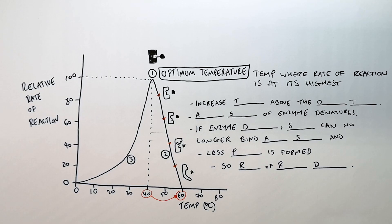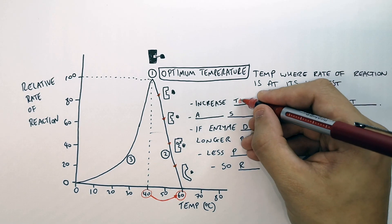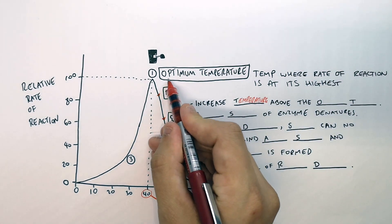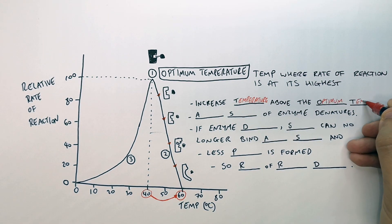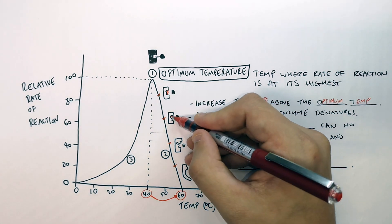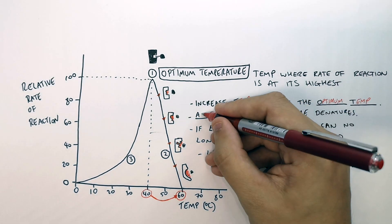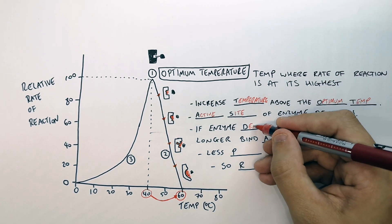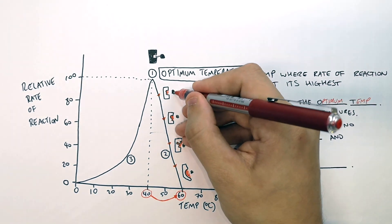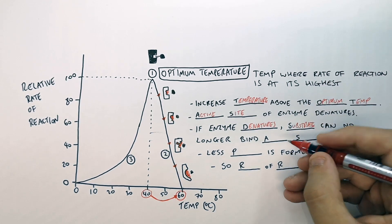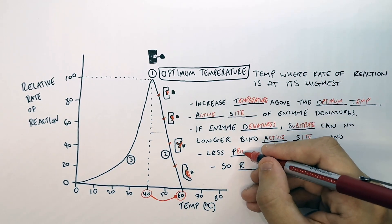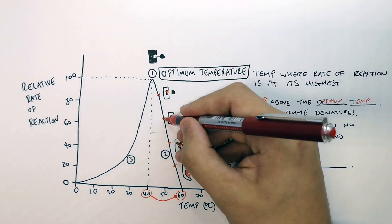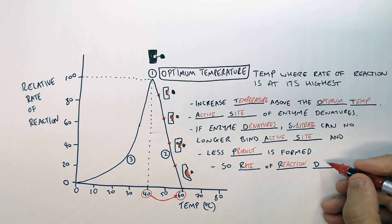If you increase the temperature above the optimum temperature, the active site of the enzyme denatures. If the enzyme denatures, the substrate can no longer bind the active site and less product is formed. As you can see, the rate of reaction decreases.